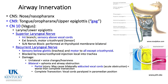The graphic on the bottom right shows in light blue the fifth cranial nerve distribution — nose and nasopharynx; yellow is the glossopharyngeal or ninth cranial nerve — tongue, oropharynx, upper epiglottis, and gag reflex; and pink is the distribution of the vagus nerve.